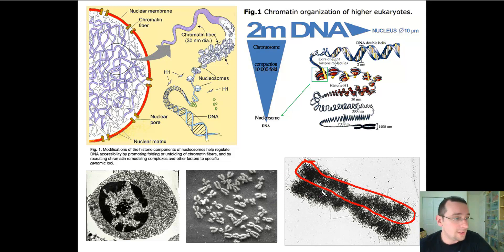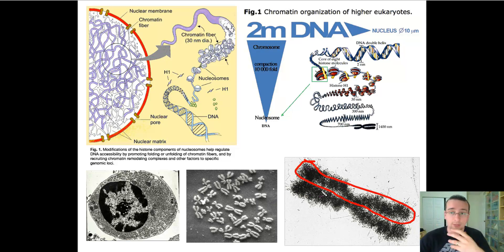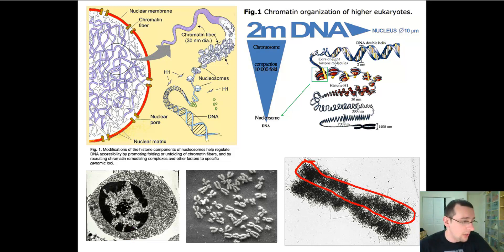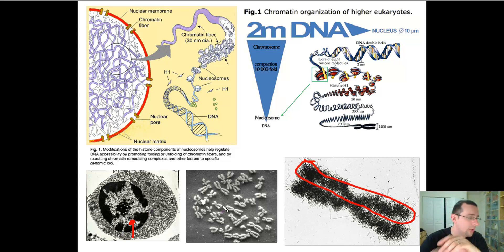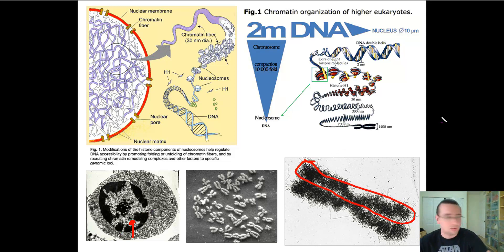Also notice that before that process — before you get to telophase and the DNA coils itself up — you don't have a chromosome at all. What you actually have is chromatin, as you see in this picture, which is a jumbled mass of DNA. Some pieces are more coiled up than others, and you can see that happening in that picture.